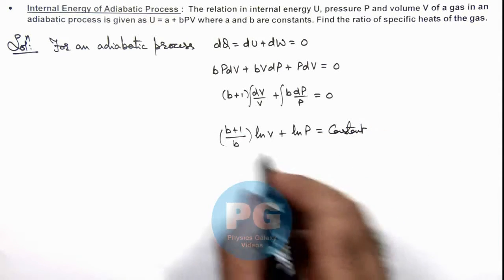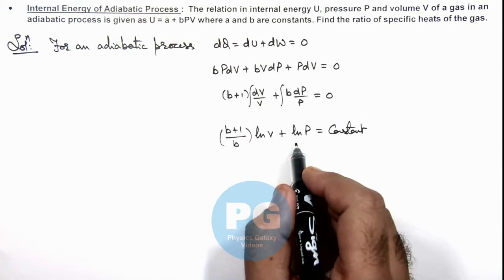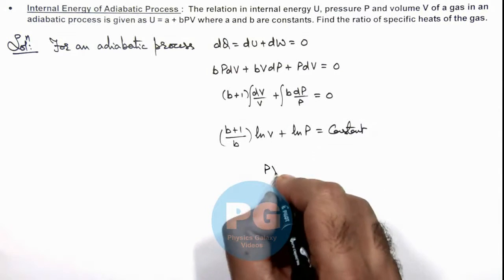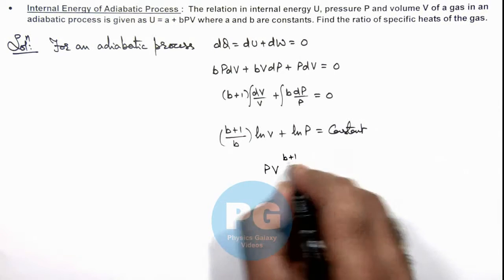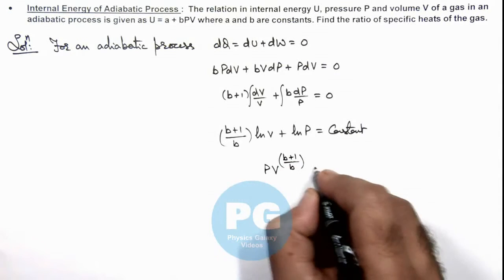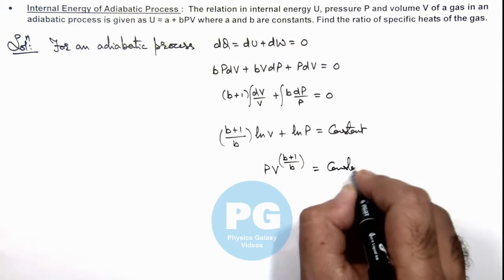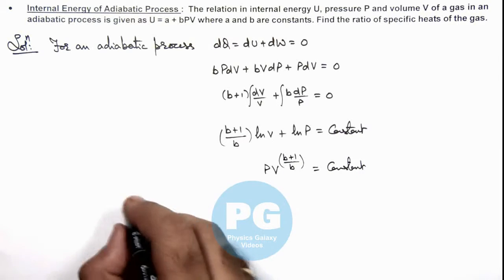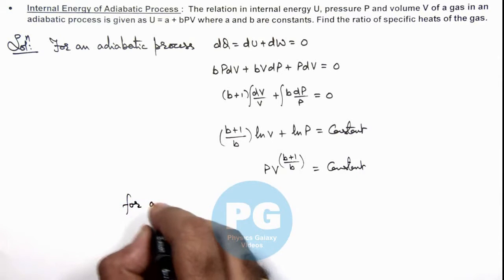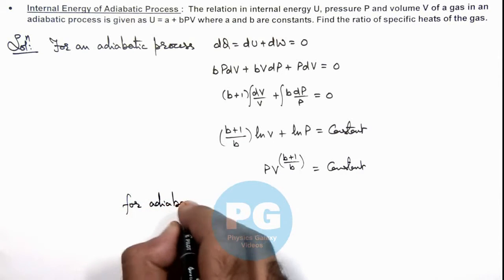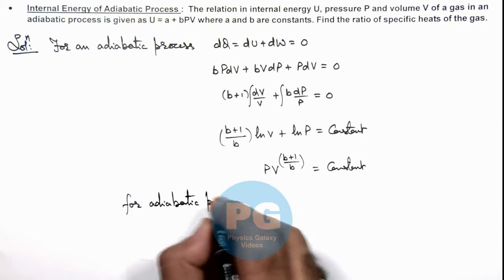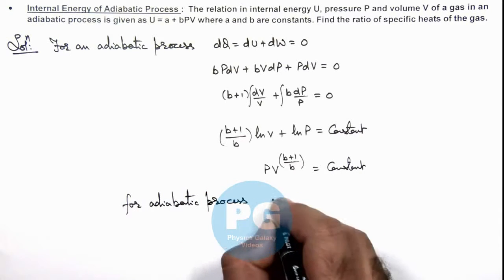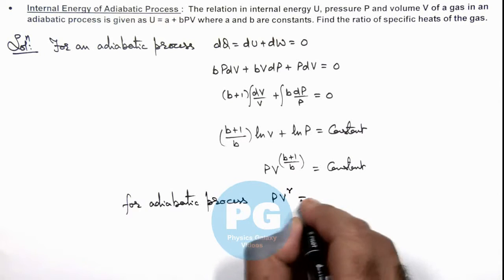Now in this situation, on further simplifying, this will give us P times V to the power (b + 1)/b is another constant. And we know for adiabatic process, we use the relation PV to the power gamma is a constant.